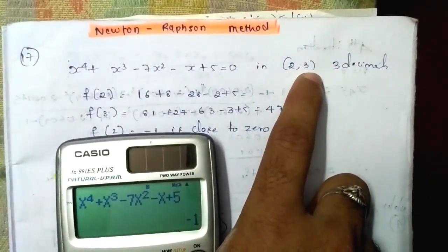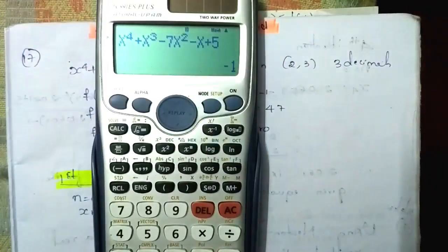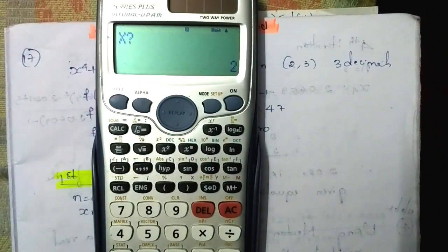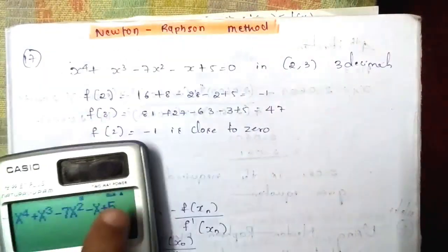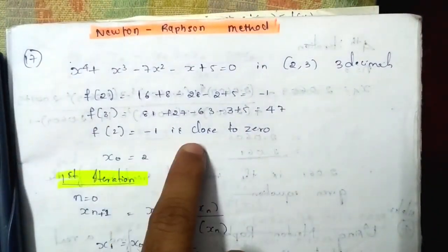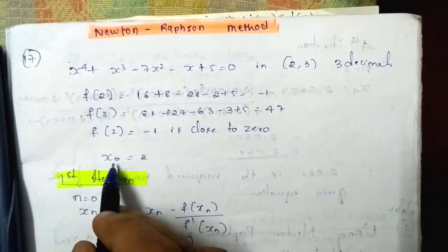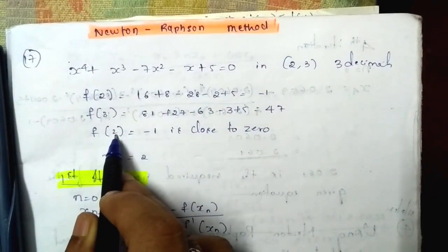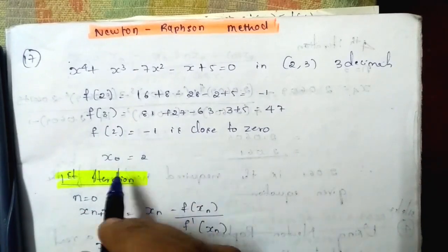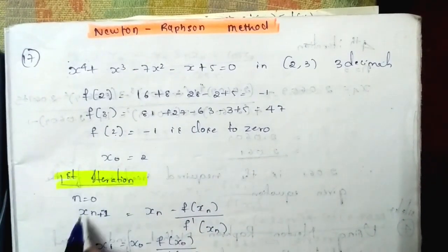We can try 3 also. Press equals and set x value to 3 — the answer is 47. Since minus 1 is closer to 0, the x naught value is 2. This is the x naught value for the first iteration, putting n equal to 0.